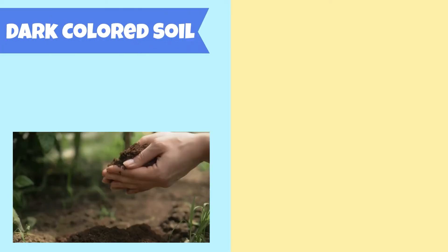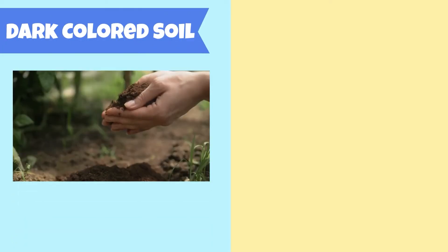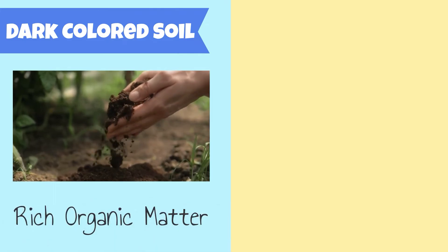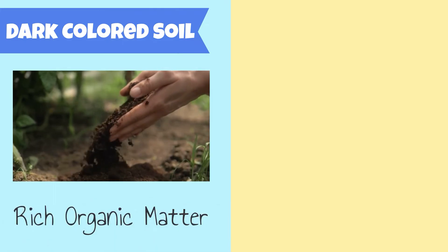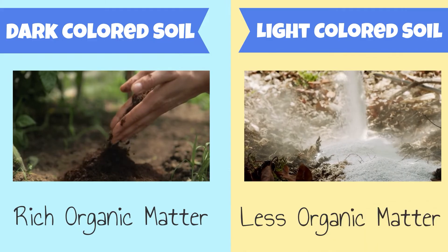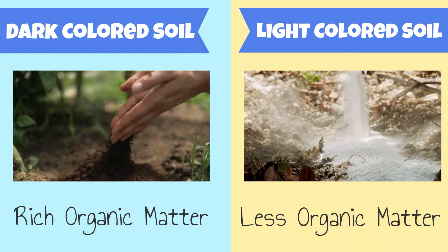Dark-colored soil is an indicator of rich organic matter being present. Lighter-colored soil has less organic matter present.